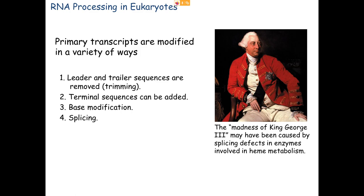The first thing listed is that leader and trailer sequences are removed, or essentially trimmed away. This is an exonuclease function. Either the 5' end, called the leader end, or the 3' end of the RNA molecule, called the trailer end, can be removed one base at a time. That will, of course, make the molecule shorter. We can do one or both of those things, depending on which RNA we're talking about.